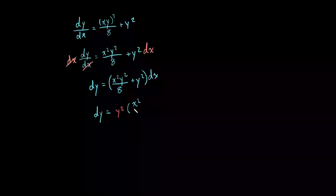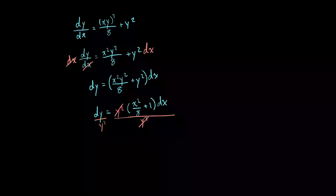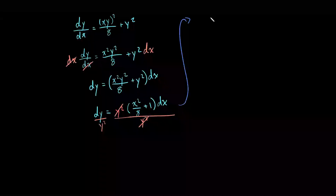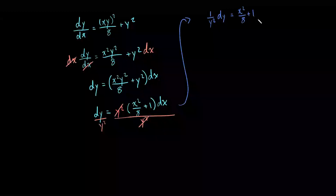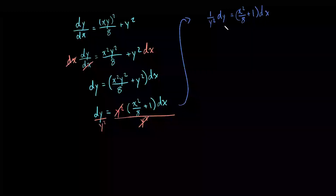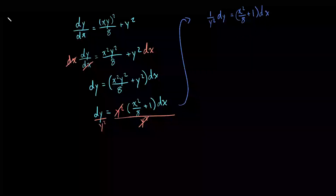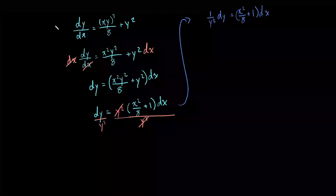So what we're left with is x squared divided by 8 plus 1, all times dx. Now what we can do is divide both sides by y squared. Moving our work over, what we're left with is 1 over y squared times dy is equal to x squared divided by 8 plus 1, all times dx. Now we've separated our variables into two separate terms only containing either x or y.